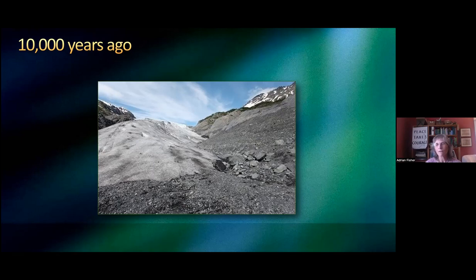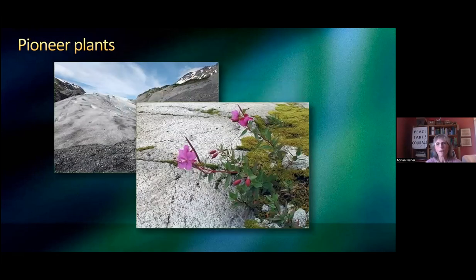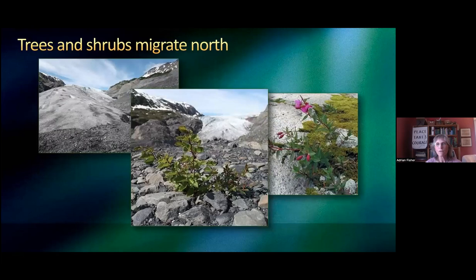When the ice sheets started pulling back, revealing the Chicago Lake Plain, revealing the land that we know today, plants were already about 50 miles south waiting to come in. And so they did. First to come were the little floral plants, the mosses, the lichens, forbs. They spread across and started creating soil where there was crumbled rock and debris left over from the massive weight of the glaciers.